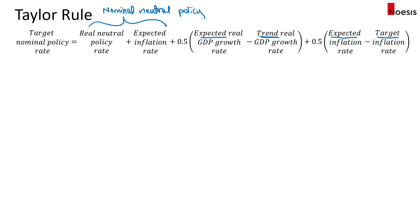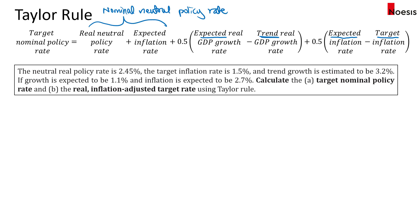Now let's look at an example. The neutral real policy rate is 2.45 percent and the target inflation rate is 1.5 percent, and the trend growth is estimated to be 3.2 percent. If growth is expected to be 1.1 percent and the inflation is expected to be 2.7 percent, calculate A, the target nominal policy rate, and B, the real inflation-adjusted target rate using the Taylor Rule.